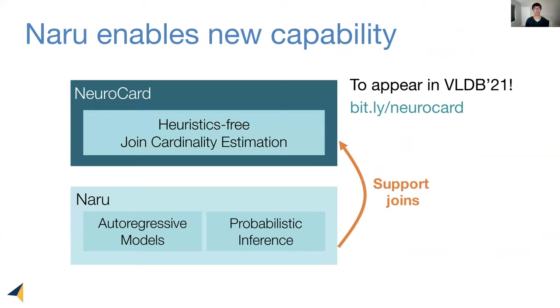Very recently, we have built on top of Naru to achieve heuristics-free cardinality estimation, even for joins. We call this new estimator NeuroCard. This is a very recent exciting development and it will be presented one year from now in VLDB21. A preprint paper is available at this link.